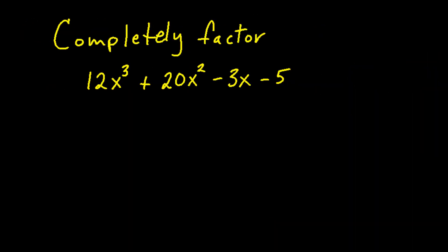This next question wants us to completely factor the polynomial 12x cubed plus 20x squared minus 3x minus 5. Because this polynomial contains four terms, we will want to factor it by the grouping method. The grouping method involves factoring out the GCF of the first two terms and the GCF of the last two terms.